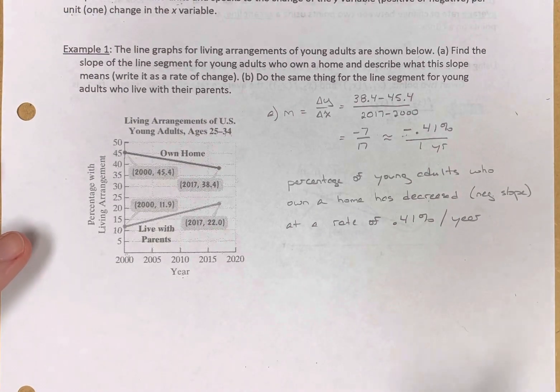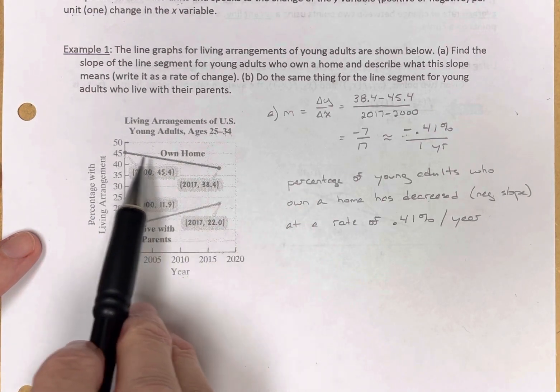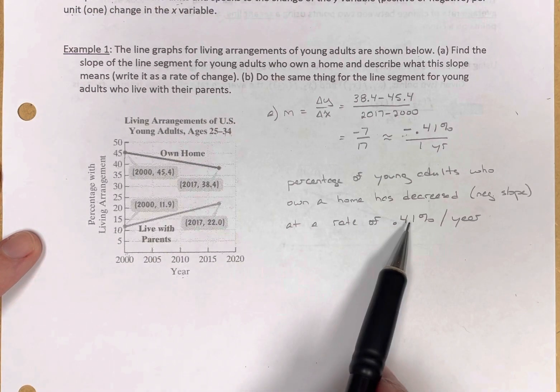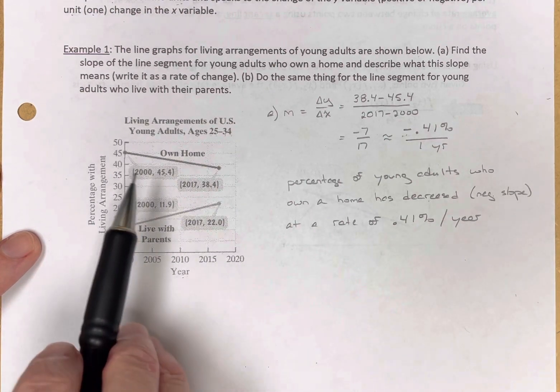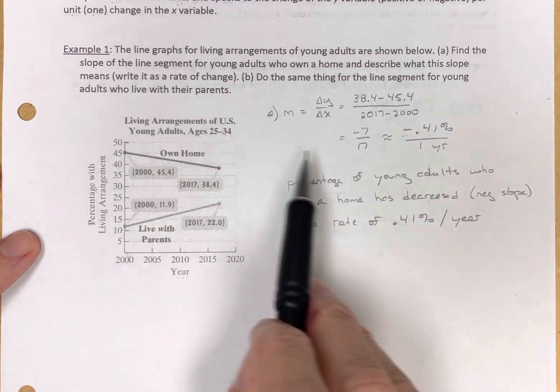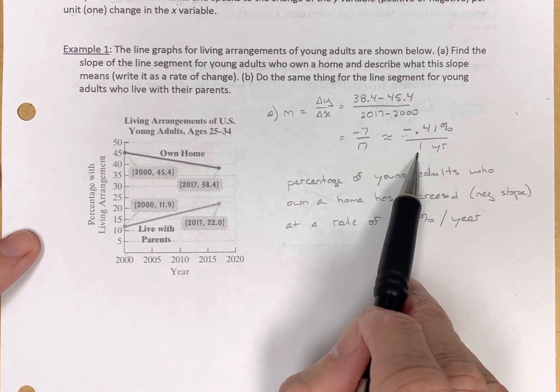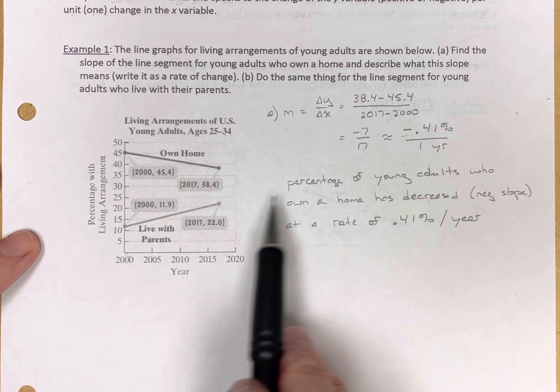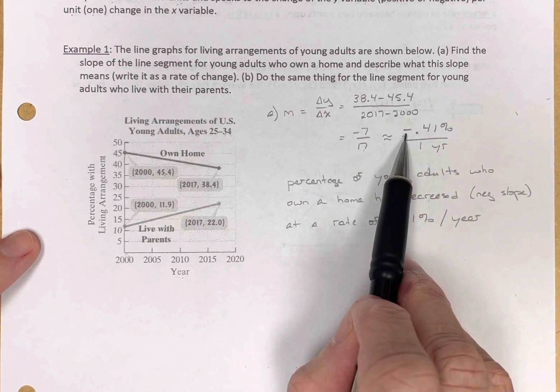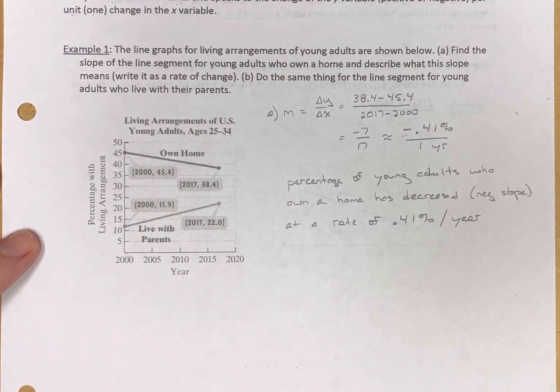So to interpret this for someone, the percentage of young adults who own a home has decreased at a rate of 0.41% per year between 2000 and 2017. So that's calculating the slope, writing it with the denominator of 1, and then interpreting that in the written word, the negative meaning decreased, and then 0.41% per year so that people can understand it.